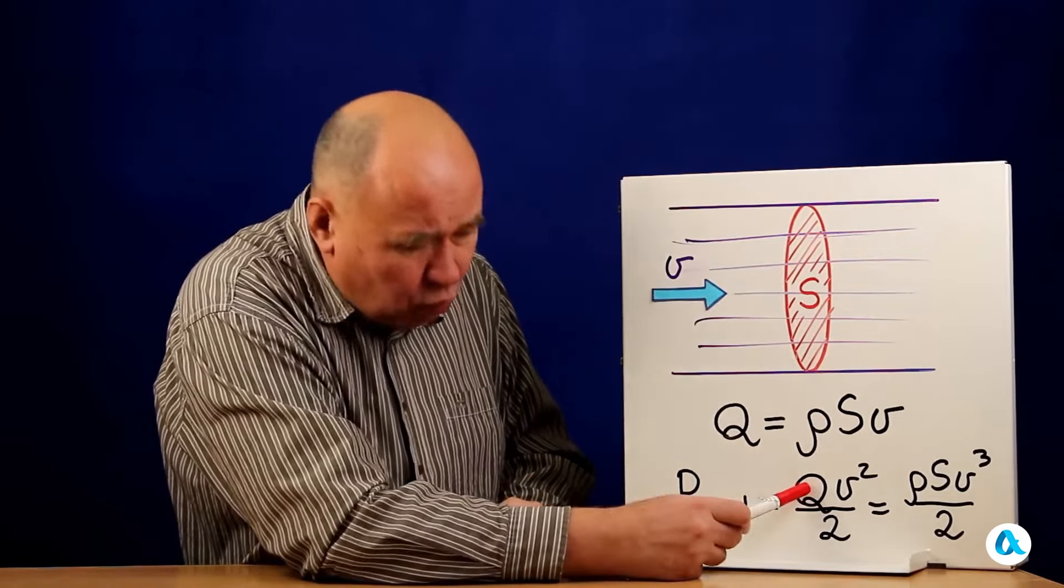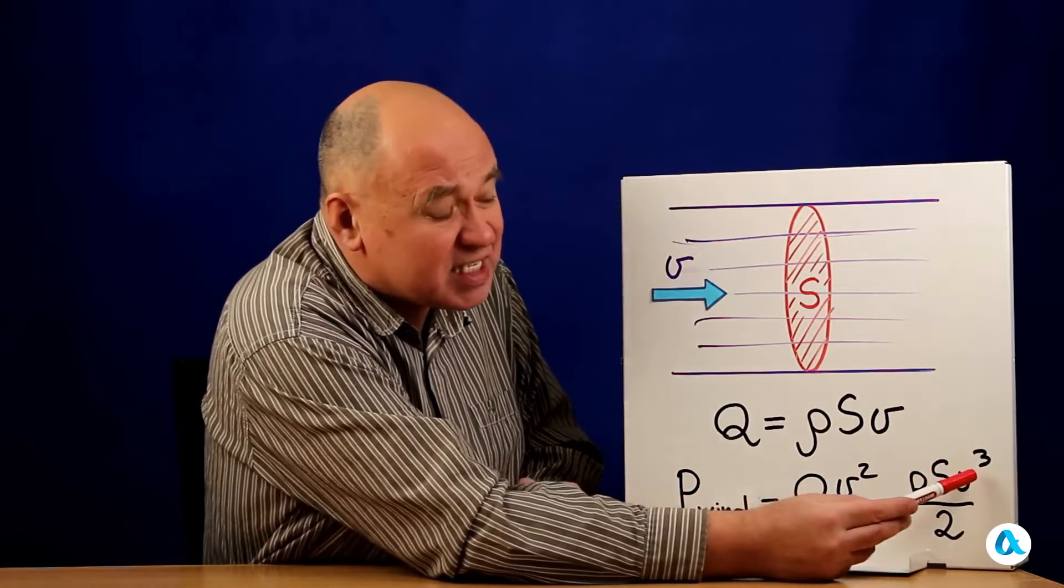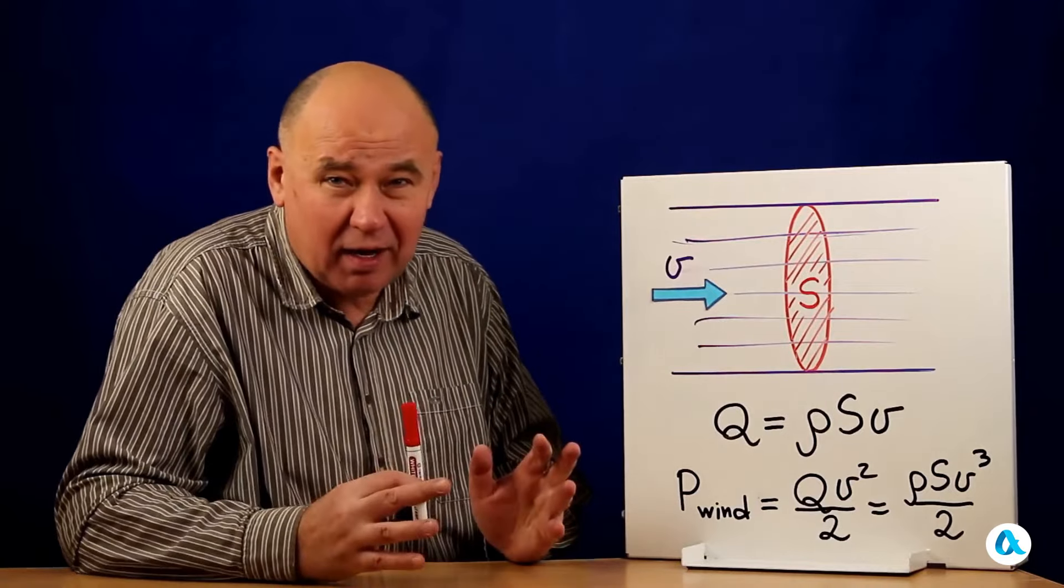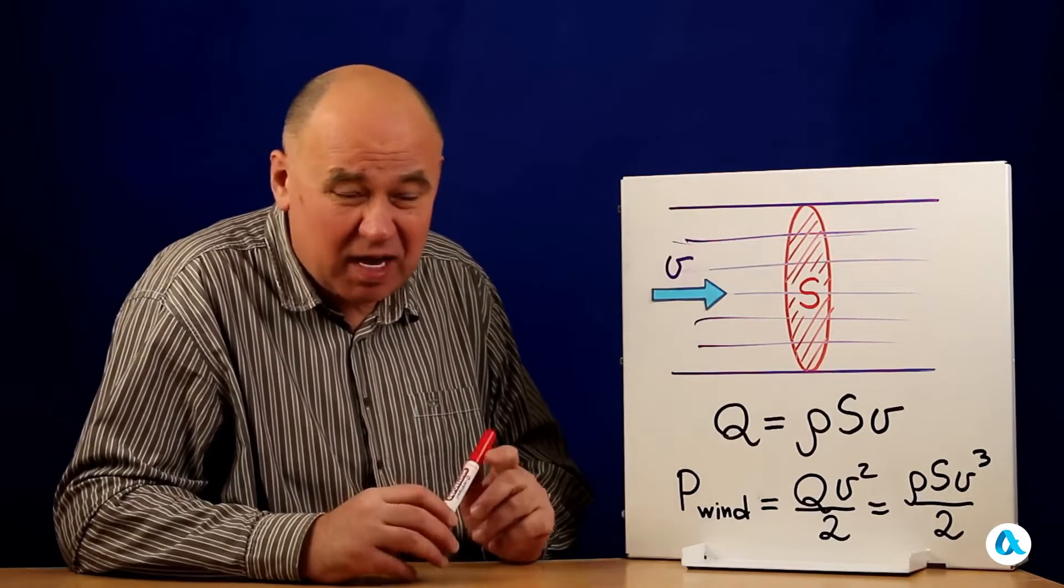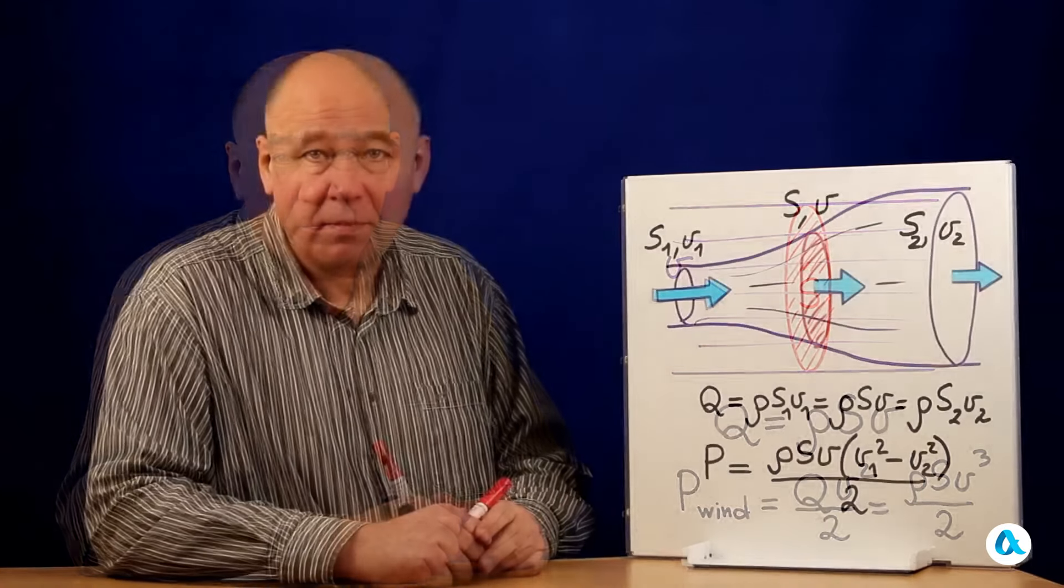Squared divided by 2, and we get ρsv cubed divided by 2. The energy of the wind flow, transferred per unit of time, is indeed directly proportional to the cube of the speed of this flow.